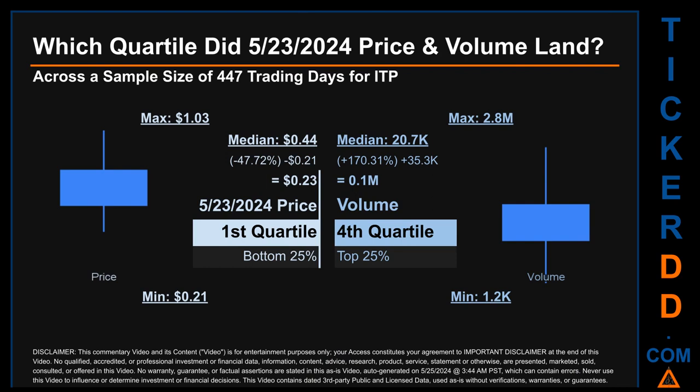Hello, my name is Maria. Which quartile did May 23rd, 2024 price and volume land across a sample size of 447 trading days? The maximum end-of-day price for ITP was one dollar and three cents while the minimum was 21 cents. Within that price range, May 23rd, 2024's price of 23 cents landed within the first quartile, meaning it was within the bottom 25 percent of all sampled end-of-day prices. The day's volume landed within the fourth quartile, marking it within the top 25 percent of all sampled daily volume, which saw a max of 2.8 million and a minimum of 1,200. ITP has a median price of 44 cents; therefore, May 23rd's price was lower from that middle marker by 47.72 percent, while the day's volume of 0.1 million was more than the median by 170.31 percent.